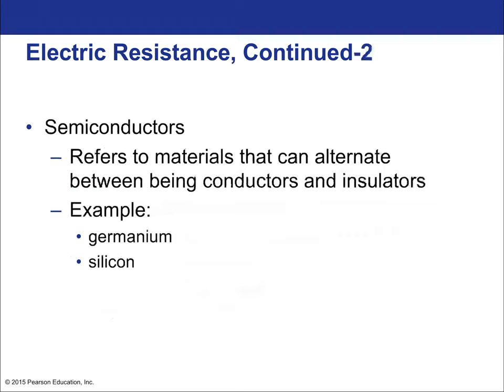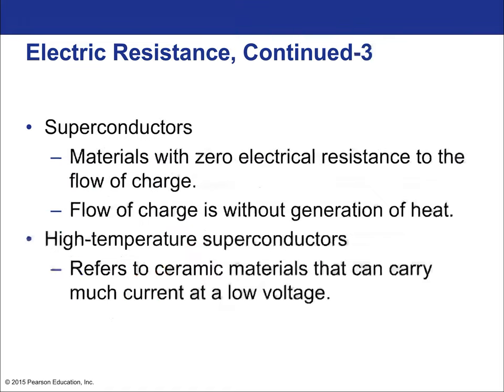Semiconductors refer to materials that can alternate between being a conductor and an insulator; germanium and silicon are key types. Superconductors are materials with zero electrical resistance to the flow of charge — electrons flow with no energy loss to heat. High-temperature superconductors refer to ceramic materials that can carry much current at a low voltage.